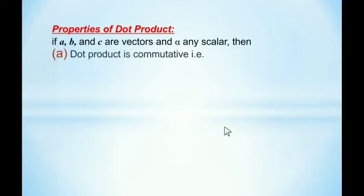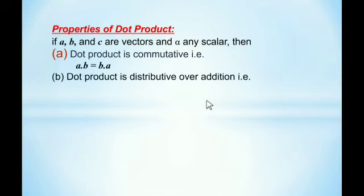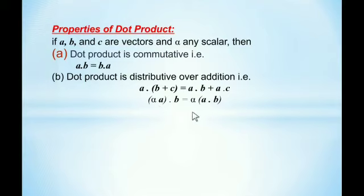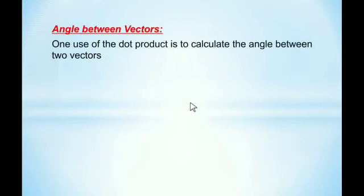The dot product is commutative: a·b = b·a. The dot product is distributive over addition: a·(b + c) = a·b + a·c. Also, we can write α(a·b) = (αa)·b, since α is a scalar and a, b are vectors — both forms are equivalent. Angle between vectors: one use of the dot product is to calculate the angle between two vectors.